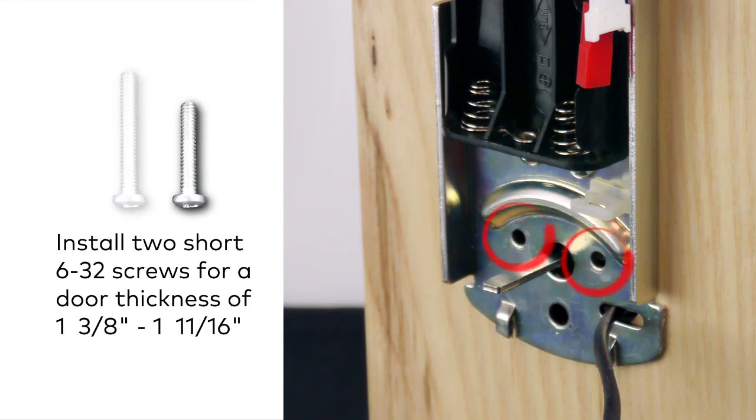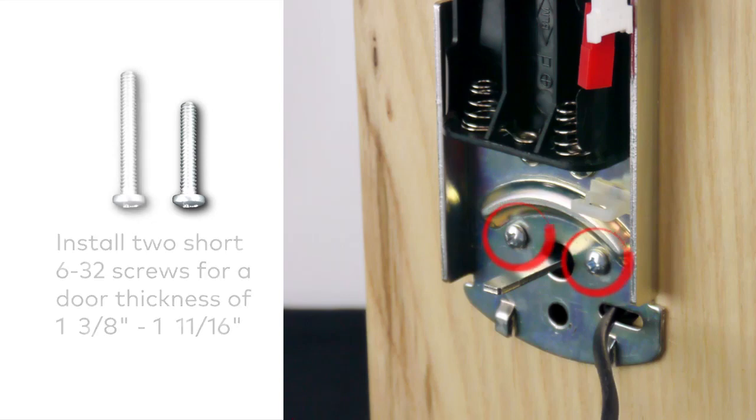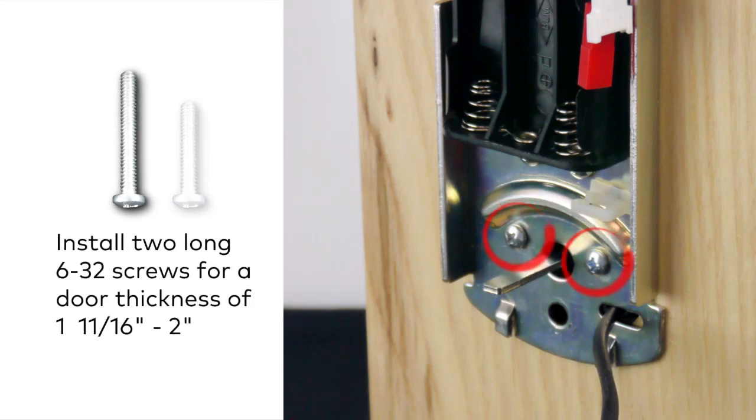Additionally, if the door thickness is between 1 3/8 inch and 1 11/16 inch, install two short 6x32 screws. If the door thickness is between 1 11/16 inch and 2 inches, install two long 6x32 screws.